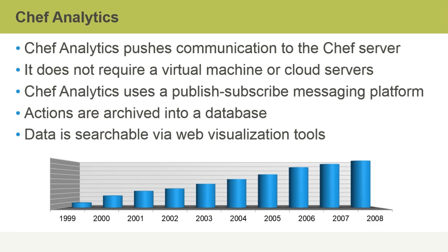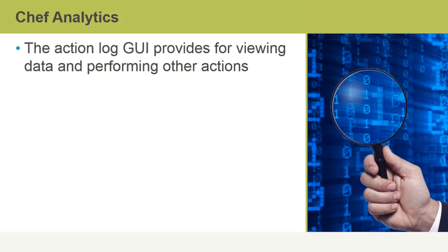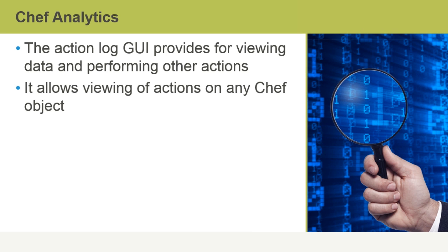Data can be accessed in many different ways using different tools. For example, data is searchable via web visualization tools. The look, feel, and presentation of the data is only limited by the tool that you are using. The Action Log GUI provides for viewing data and performing other actions, which may be employed to analyze data to look for patterns. The GUI also allows for viewing of actions on any Chef object. How you choose to view the data is up to you.